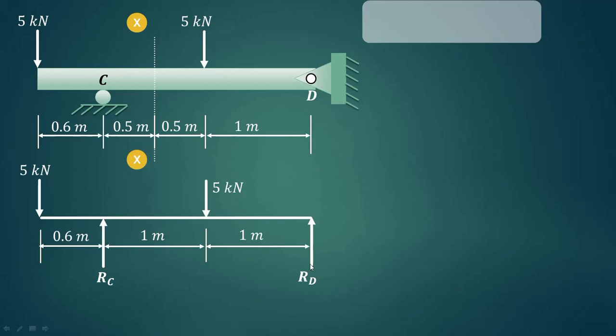Vertical reaction at point C is Rc and the reaction at point D is Rd. First we'll apply the condition of equilibrium: summation of forces in Y direction is equal to 0. Upward forces positive and downward forces negative. So Rc and Rd they are acting in the upward direction so they are positive, whereas 5 kN is acting in the downward direction, this is also acting in the downward direction, so both these forces are considered as negative.